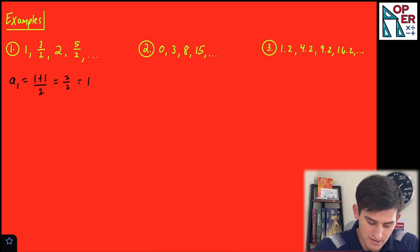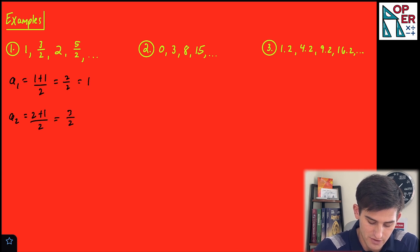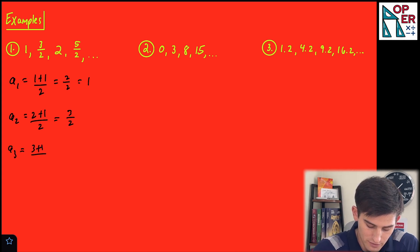So now let's look at the next term. Let's say for the second term, we did two plus one divided by two. So now we have three over two, which is what we see. For the third term, what if we did three plus one over two? So now we get four over two, which is equal to two.